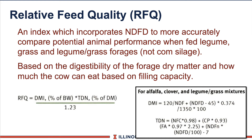The new measurement is relative feed quality, known as RFQ, developed by the University of Wisconsin. The beauty of this program is that it took RFV and now uses NDF digestibility. So now we are looking at the quality of the fiber rather than just the percent of the chemical fiber. You can see the formulas listed here and explore those at your leisure — another new term you'll see on forage test results.